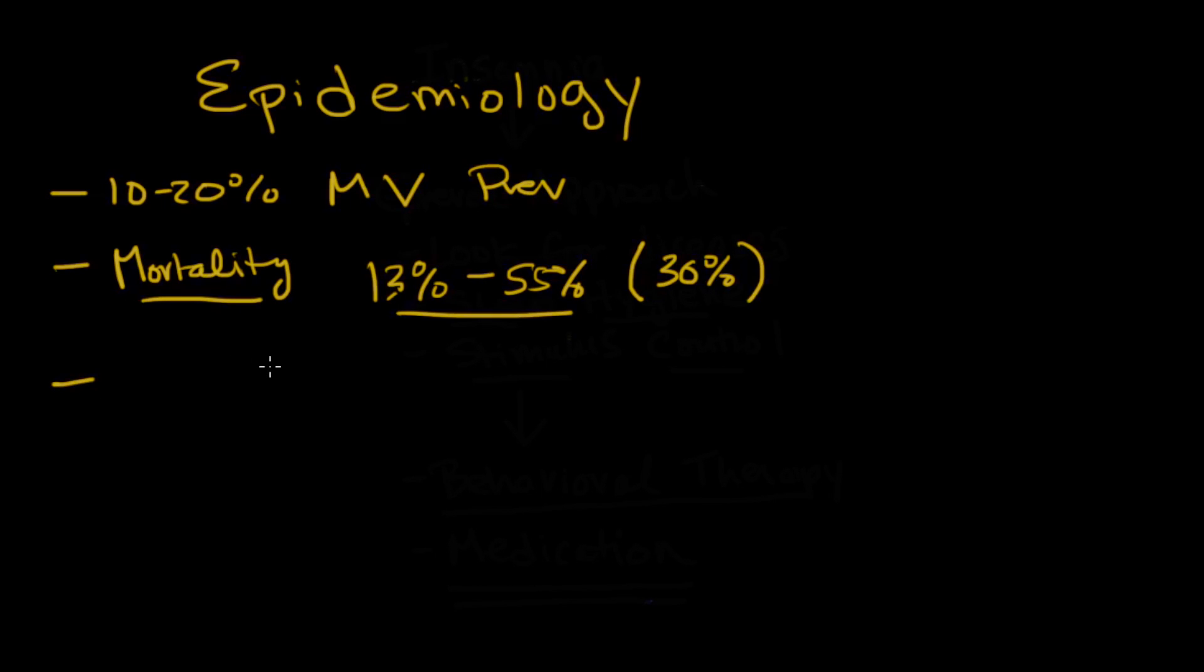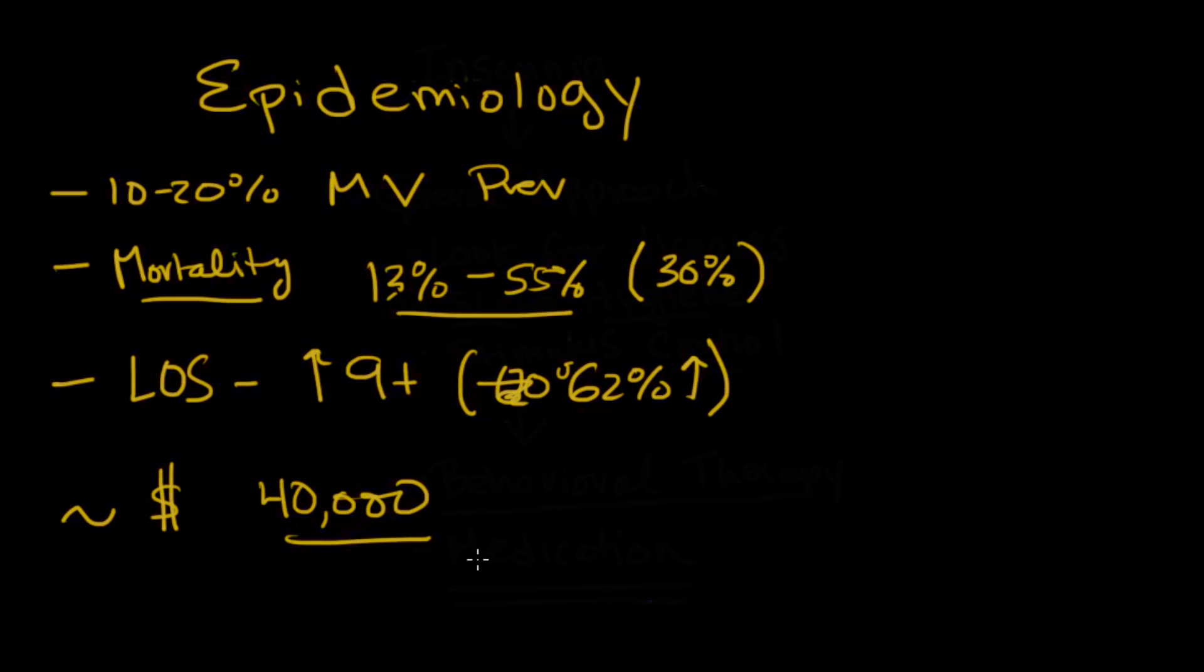Not only in terms of death and life, but in terms of financially, the length of stay in the hospital increases by about nine days. So that's an increase of about 62%. What does that translate into in terms of dollars? That's about $40,000 per patient. So if we can prevent ventilator-associated pneumonia, you can see that we can prevent a lot of bad things from happening. Let's talk about how it actually happens.